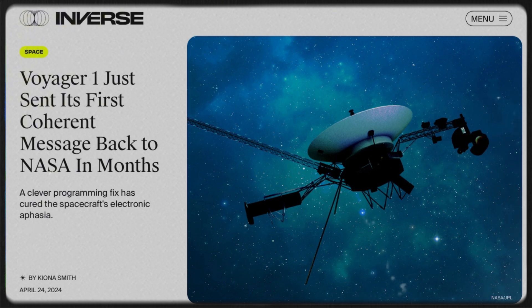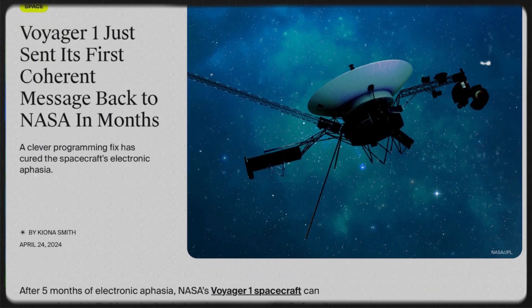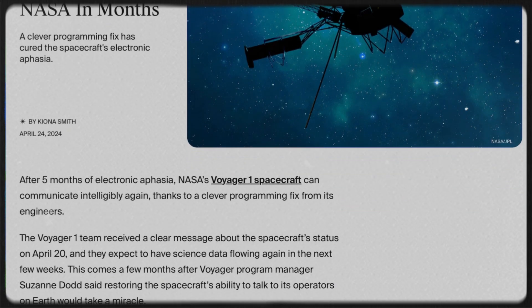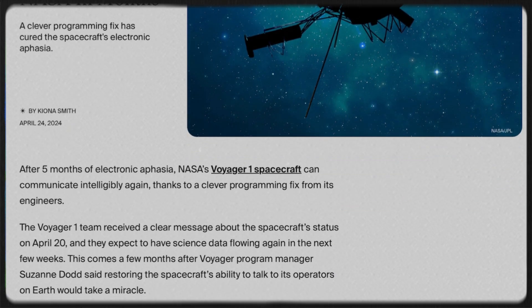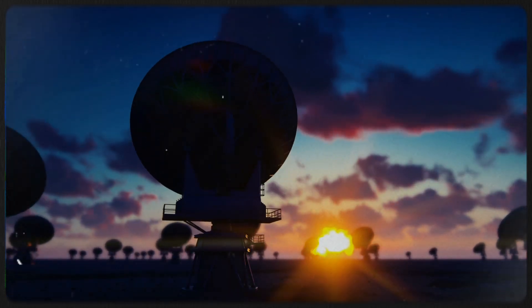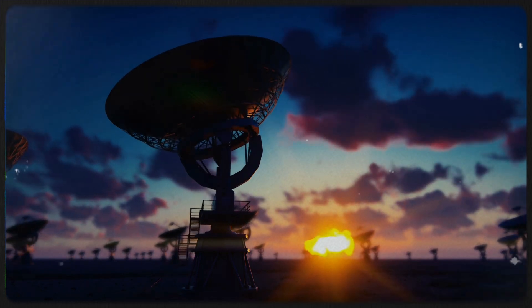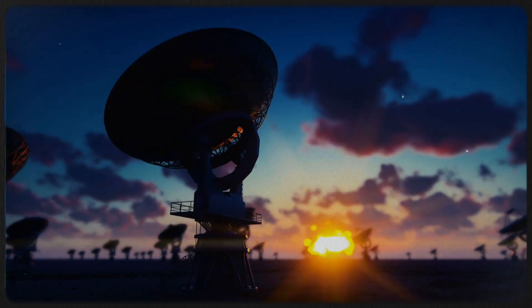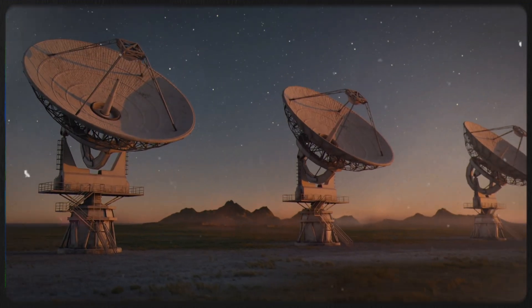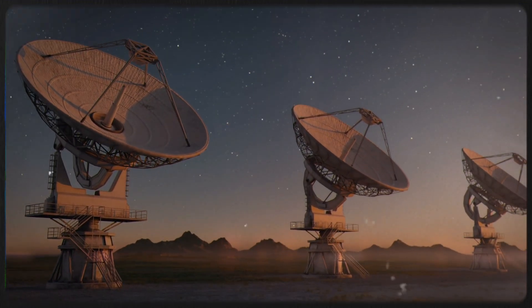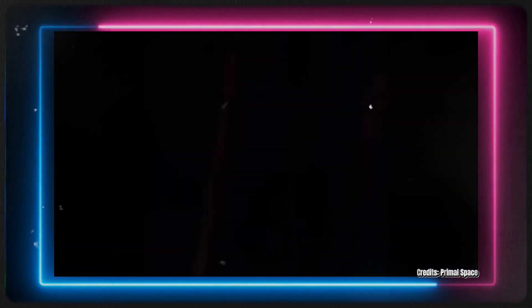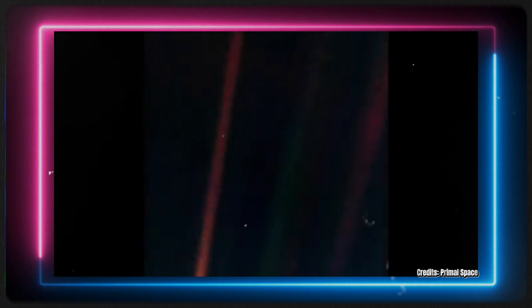Scientists speculate that Voyager 1 might be experiencing what they describe as electronic aphasia, a condition where the spacecraft's communications become jumbled, making it difficult to interpret the data it sends back. The high-gain antenna's attitude, articulation, and control systems, which were responsible for keeping the antennae pointed toward Earth, have begun transmitting garbled information rather than the routine health and status updates. NASA believes that the data Voyager 1 is sending could be random and unrelated to the ASEA's actual condition. The situation underscores the challenges of deep space exploration and the effects of aging on spacecraft.